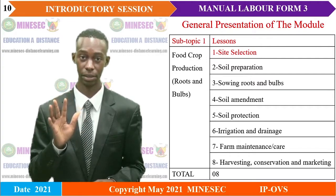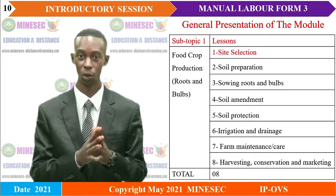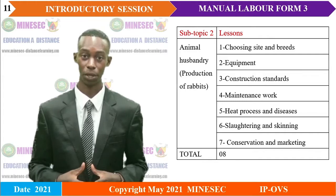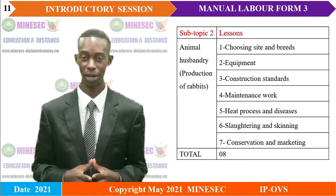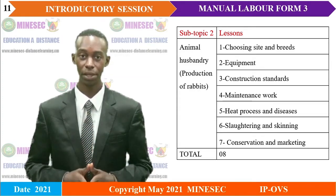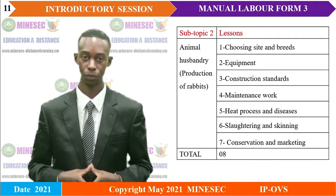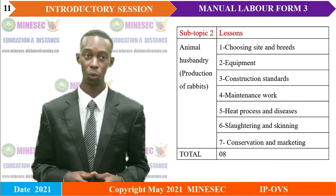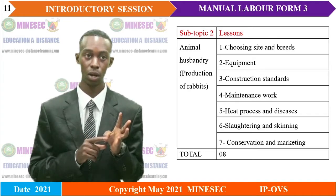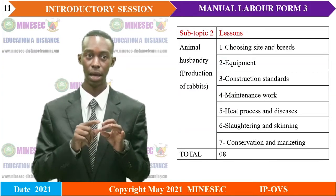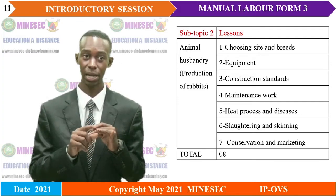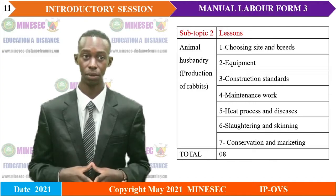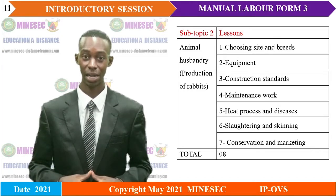The second sub-topic is Animal Husbandry. Under this sub-topic, we shall deal with the production of rabbits. It also has eight lessons: Choosing Site and Grids, Equipment, Construction Standards, Maintenance Work, Heat Process and Diseases, Slaughtering and Skinning, and finally Conservation and Marketing.